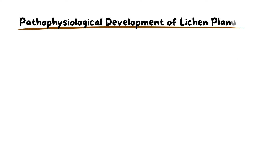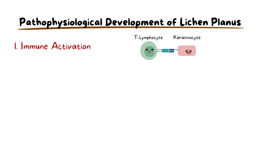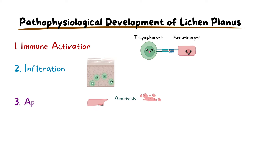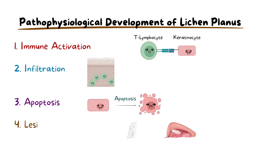The pathophysiology of lichen planus starts with immune activation, where keratinocytes — cells within the oral mucosa and skin — present an unknown antigen to the T lymphocytes. These T lymphocytes infiltrate into the skin and oral mucosa where they start to attack the keratinocytes. The cells then self-destruct in a process called apoptosis, and because this occurs in the superficial area of the oral mucosa or skin, we end up with these lichen planus lesions.